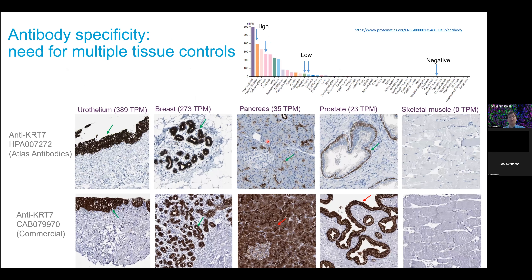This slide shows you an example of the validation of specificity and sensitivity of an antibody in immunochemical staining with two different antibodies against keratin-7. Keratin-7 is one of the biomarkers often used in cancer pathology for differentiation of tumors of epithelial origin. In the upper right corner, you can see the RNA data expression levels for different tissues. You can see that urinary bladder and breast have rather high mRNA expression levels, while in some tissues such as pancreas and prostate we have rather low expression levels, but there is presence of the protein. Then there is a large number of tissues that are supposed to be negative for keratin-7 expression.